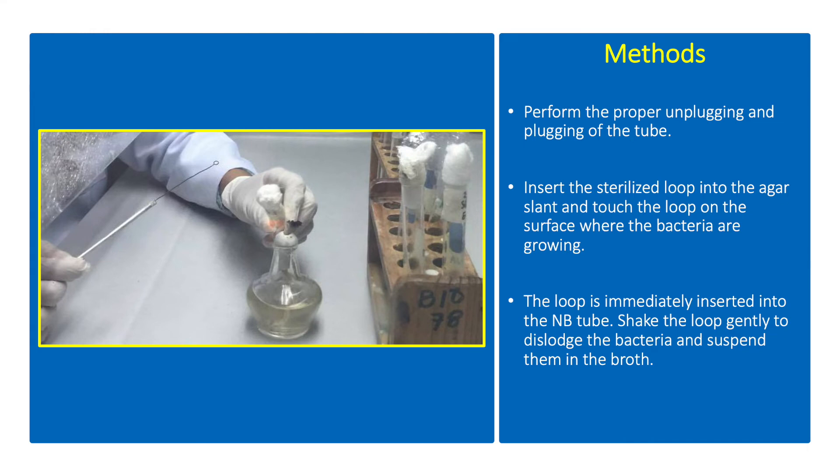Perform the proper unplugging and plugging of the tube. Insert the sterilized loop into the agar slant and touch the loop on the surface where the bacteria are growing. Immediately insert the loop into the NB tube. Shake the loop gently to dislodge the bacteria and suspend them in the broth. Withdraw the loop from the broth tube and flame sterilize.